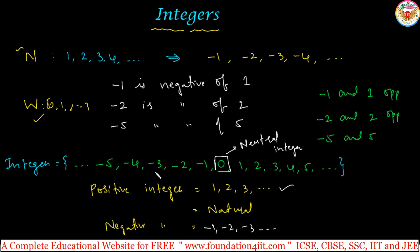The symbol minus denotes negative integers or indicates subtraction. You can use either the word 'minus' or 'negative' for negative integers. Now, let us see how to represent the negative numbers on the number line.